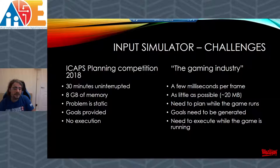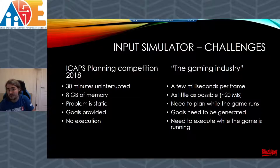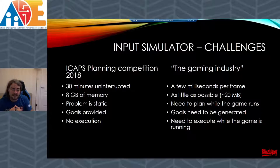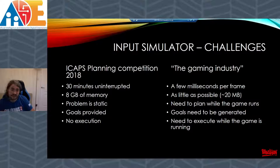Before getting into it further, it's a good idea to reflect on how academia differs from the real world — in this case the game industry. ICAPS is the main conference for AI planners, and every few years they hold a competition allowing about half an hour of time to do the planning and about eight gigabytes of memory. The problem is static, the goals are all given to you, and you don't have to execute — the moment you've got a plan, you're done. Whereas in my case, you get a few milliseconds per frame if you're lucky, only a few megabytes of memory for the planning system, you need to plan while the game is still running, you need to figure out what the goals are from the game's data, and then you also need to execute the plan you find.